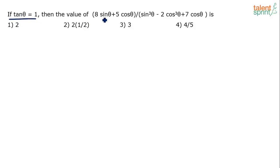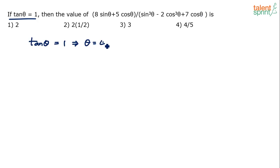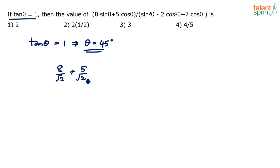Next: if tanθ = 1, find the value of (8sinθ + 5cosθ) / (sin³θ - 2cos³θ + 7cosθ). Simple — tanθ = 1 implies θ = 45°. Substitute θ = 45: sin45 = cos45 = 1/√2. Numerator: 8/√2 + 5/√2.